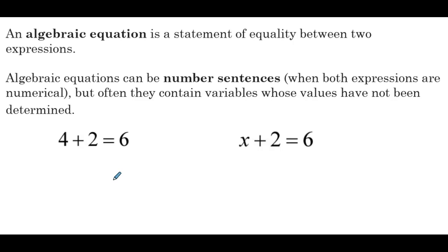If we add 4 and 2, we get 6. On the right, we have an algebraic equation, x plus 2 equals 6. Now one of our terms is a variable, and typically we'll be asked to figure out the value of x that makes that equation true. Comparing it to the left, we can see that value would be 4.